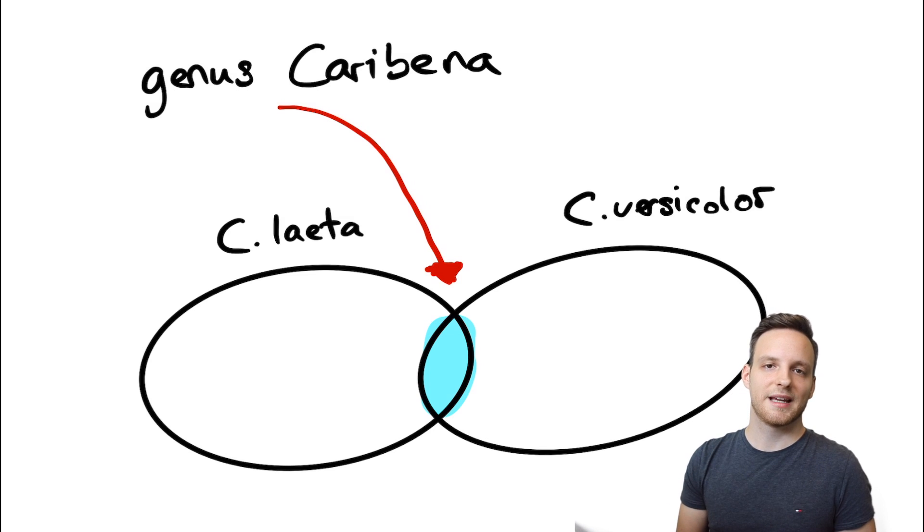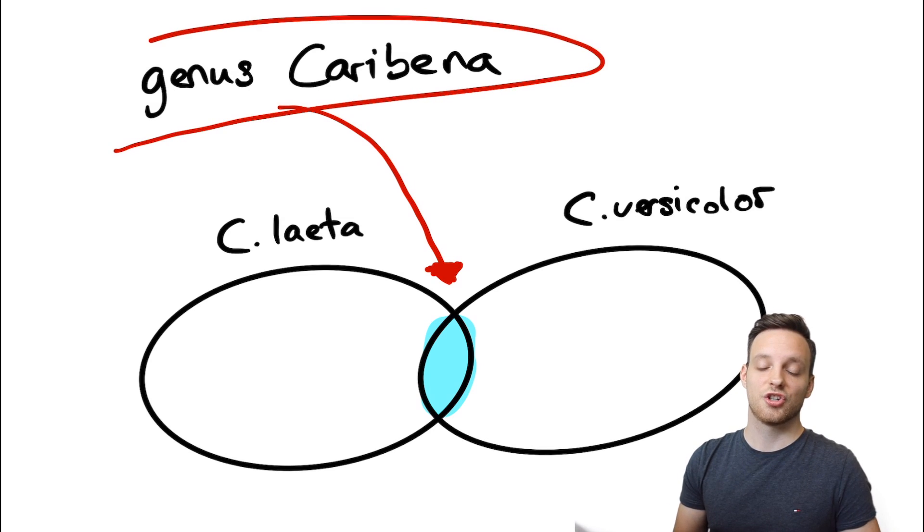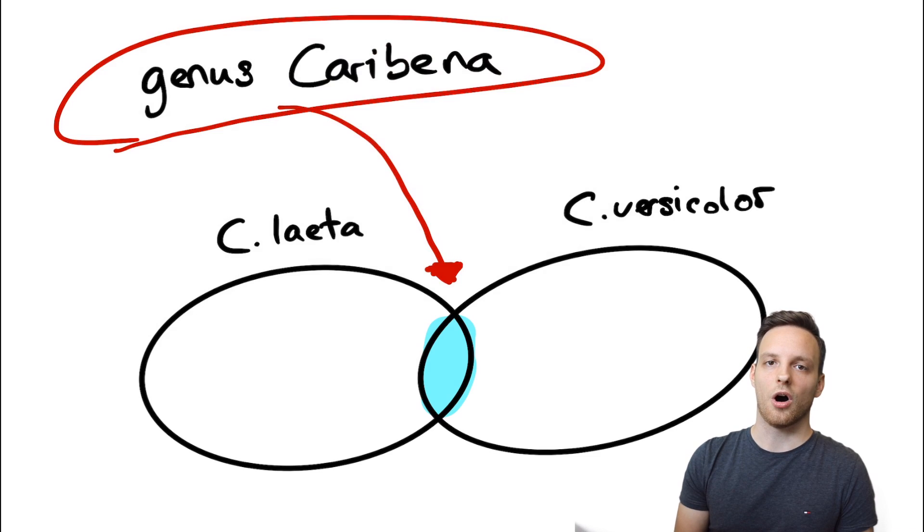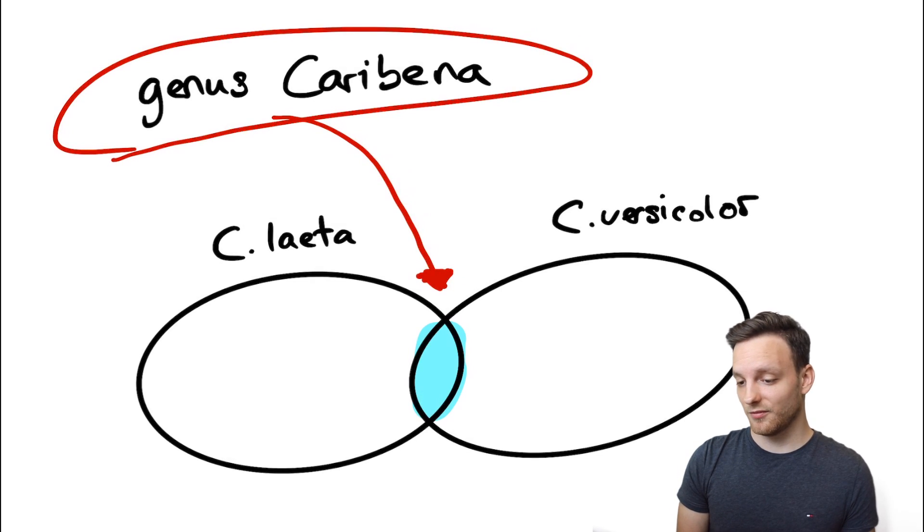Each and every single species which needs to be within this genus Caribena does need to have these features. In Caribena it is actually the fact that the urticating hairs on the abdomen are much longer and thinner than for example in other Avicularia species and due to the fact that the urticating hair patch is somewhat shiny as you see it in some Grammostola species.